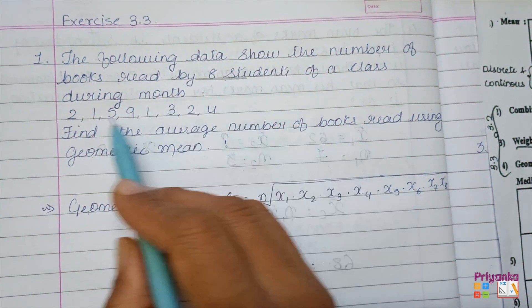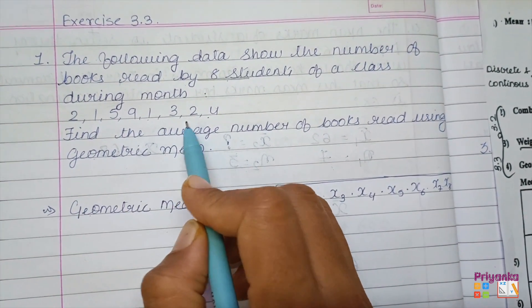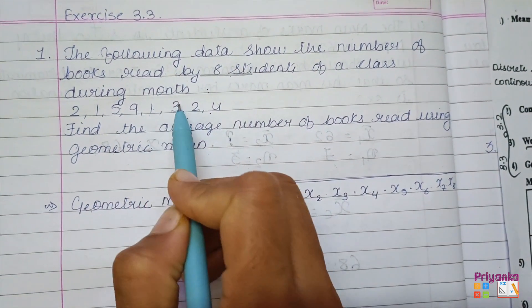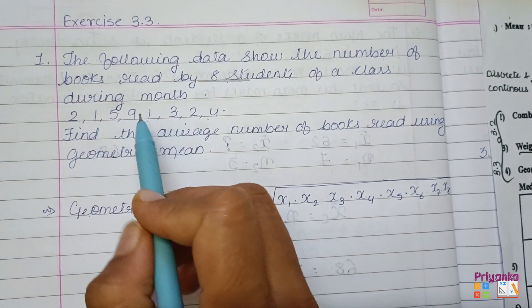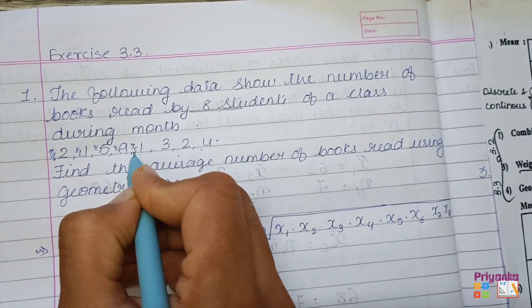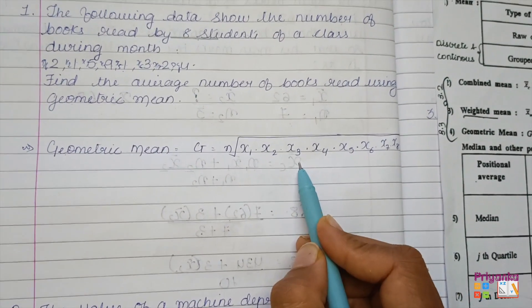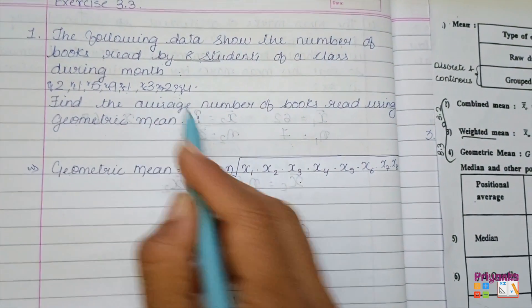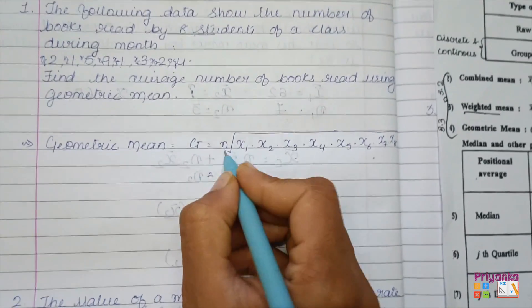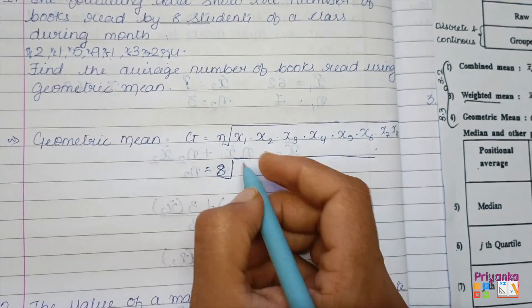Eight students' data is given, which will be denoted as x₁, x₂, and so on. There are 1, 2, 3, 4, 5, 6, 7, 8 numbers, so here we'll denote as x₁, x₂, x₃, x₄, x₅, x₆, x₇, x₈, which is given in the formula.